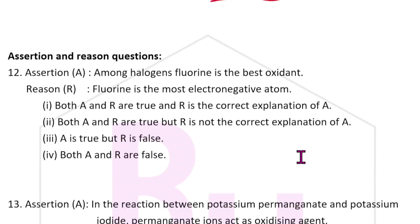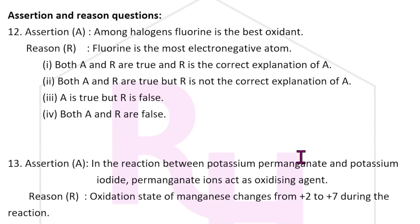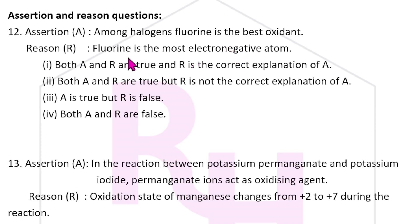Twelfth question — assertion-reason: Among halogens, fluorine is the best oxidant. No doubt about that. Reason: fluorine is the most electronegative element — that is correct. But electronegativity is not the reason for it being the best oxidant (the actual reason relates to bond energy and hydration energy). So the answer for this question is the second option.